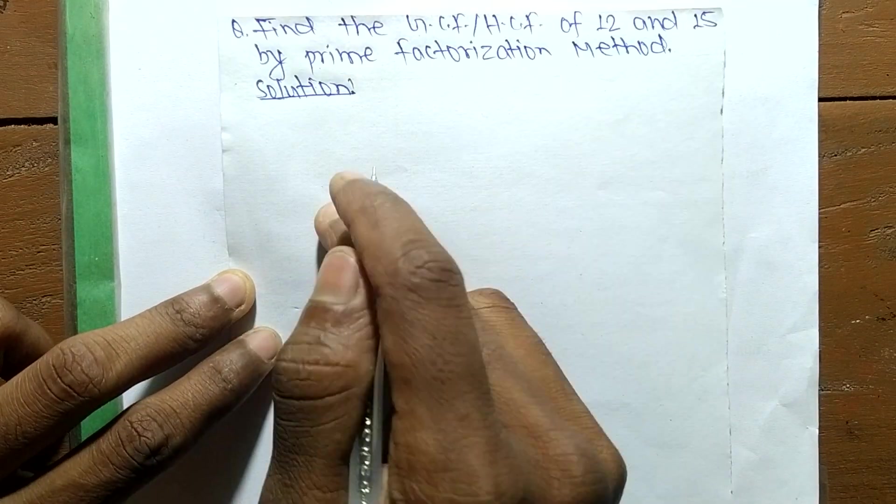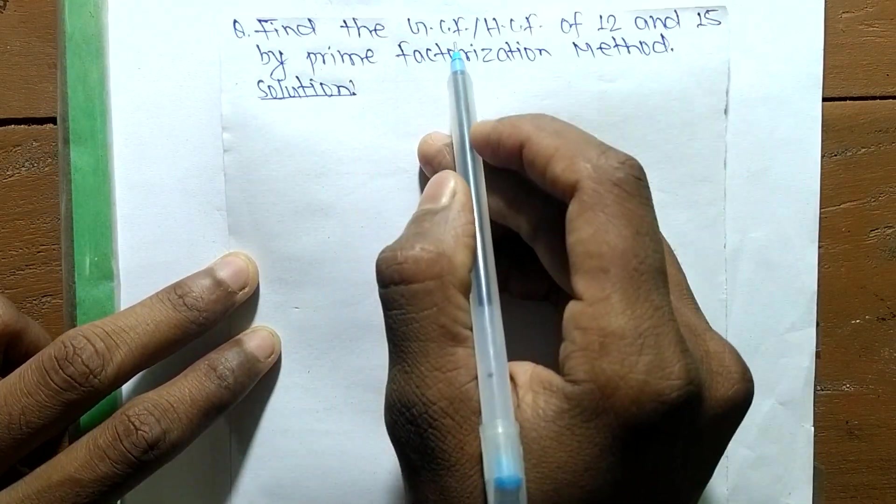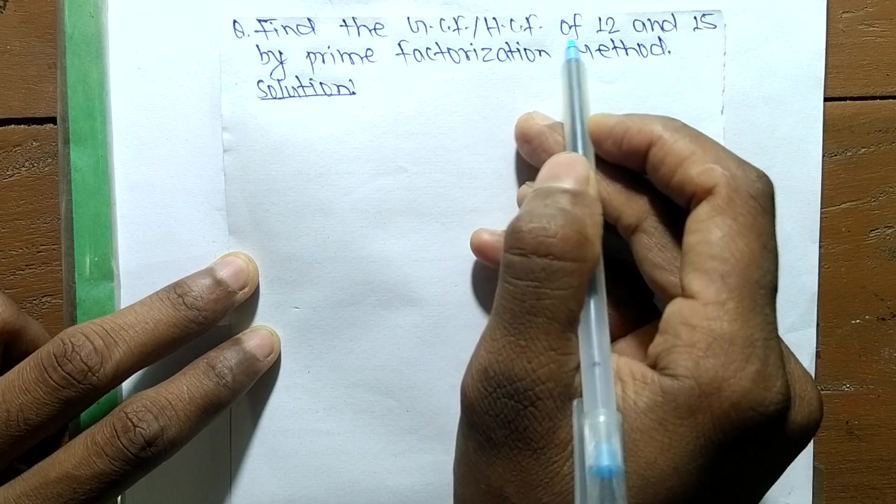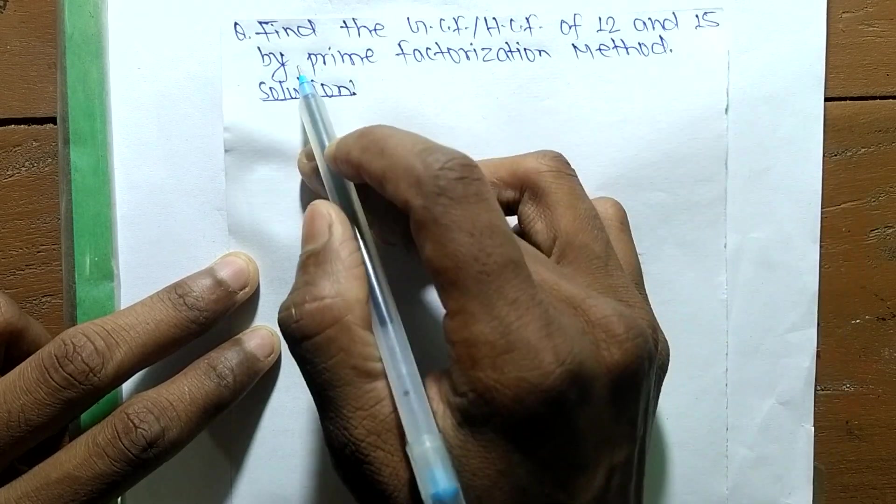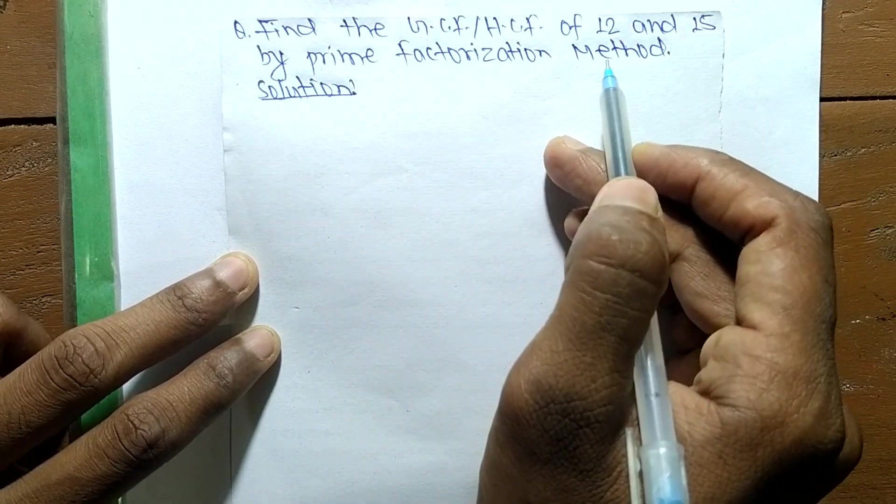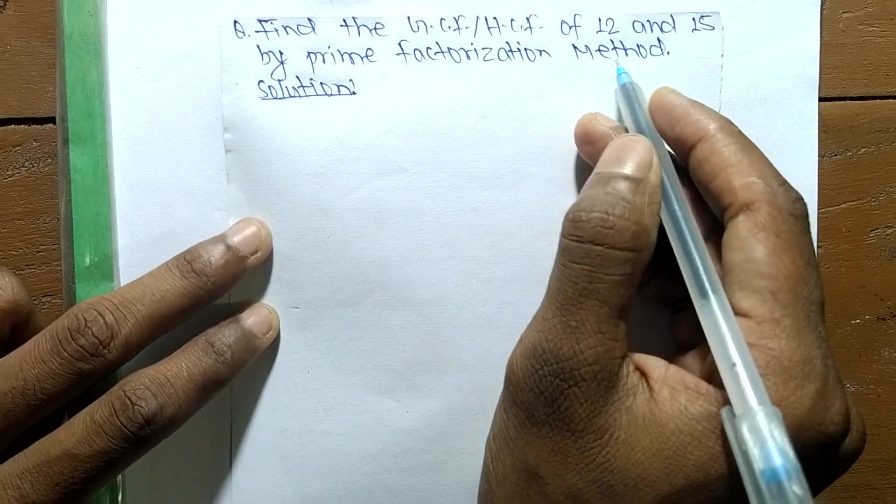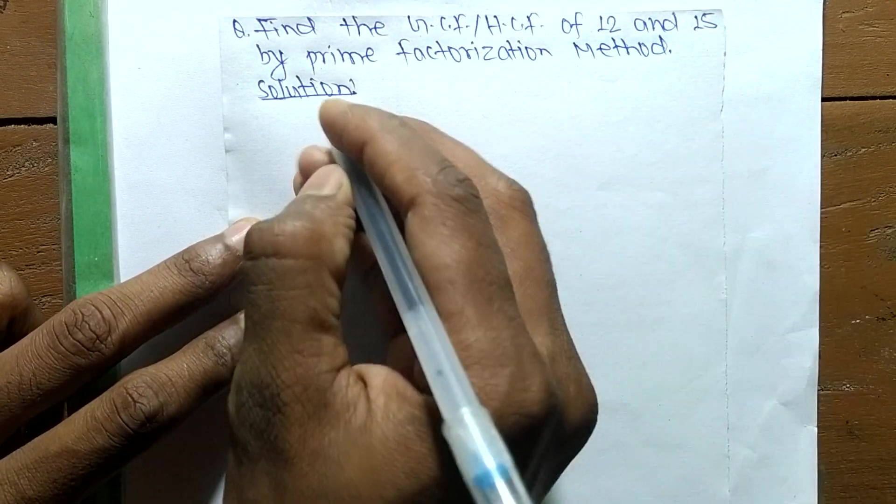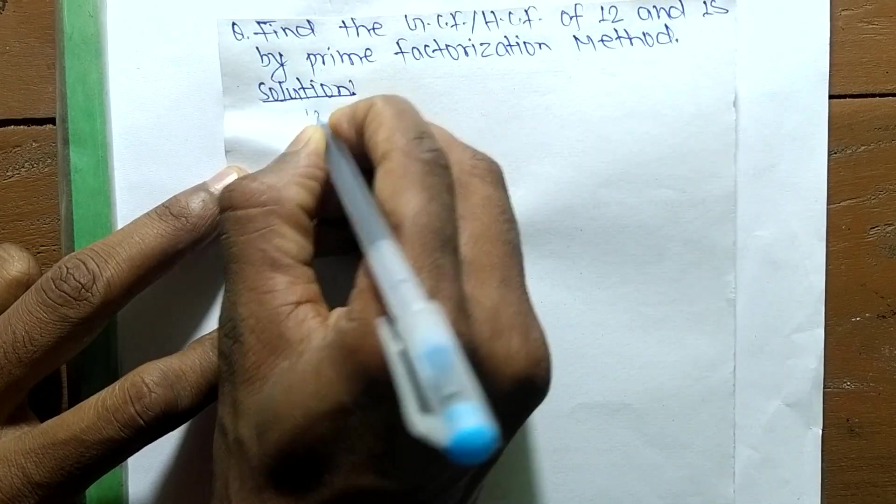So today in this video we shall learn to find the GCF or HCF of 12 and 15 by prime factorization method. So first of all, you find out the prime factors of 12 and 15.